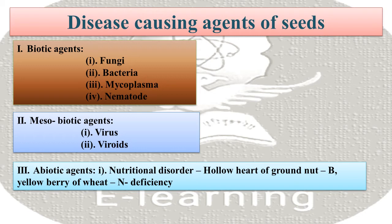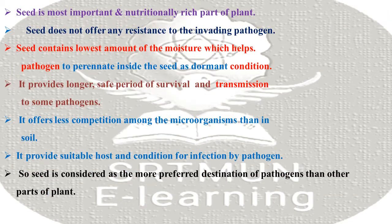And last, abiotic agents. First of all, nutritional disorders — for example, hollow heart of groundnut, and yellow berry of wheat due to zinc deficiency.